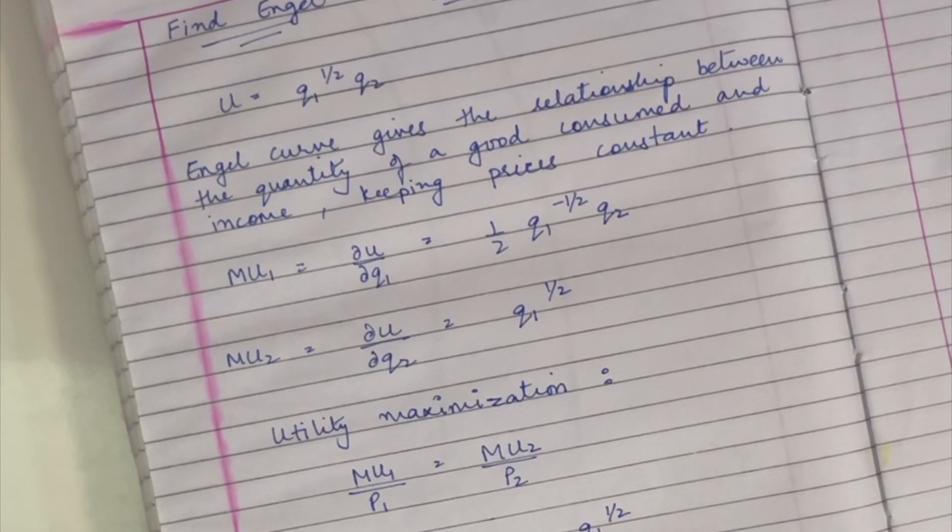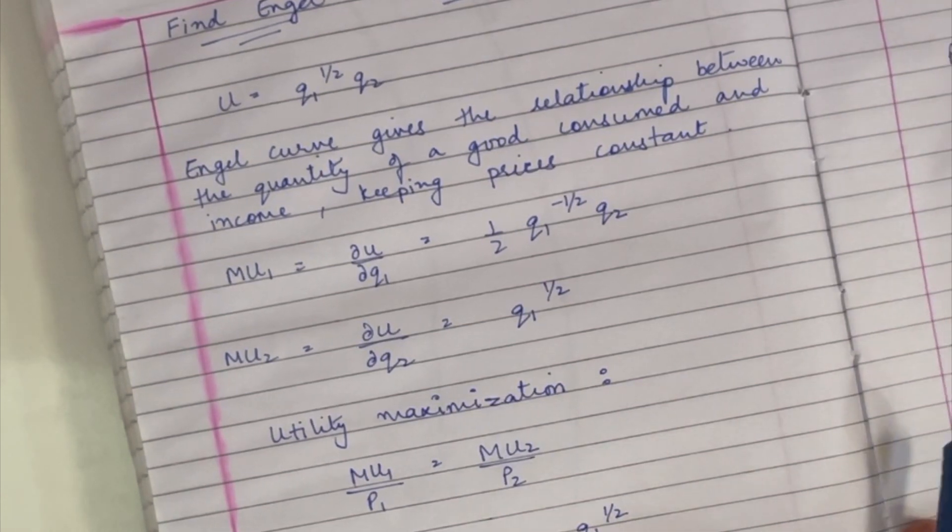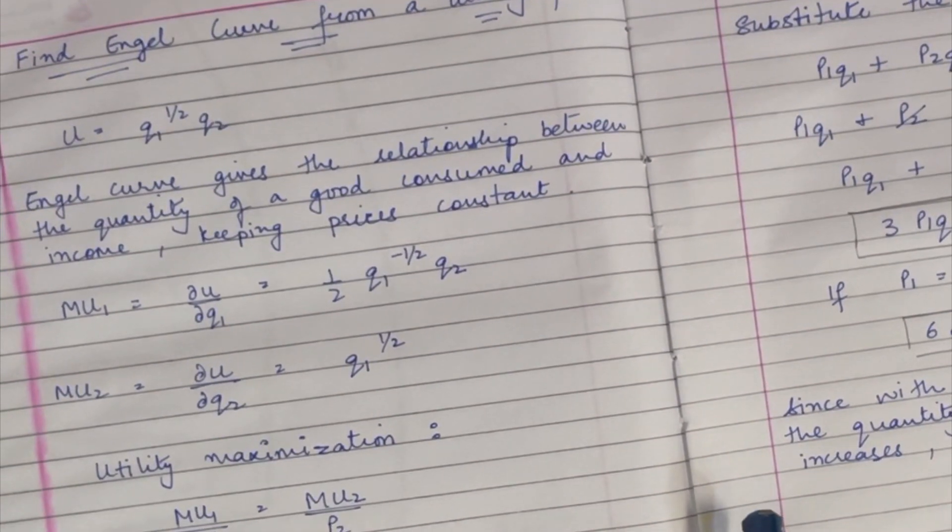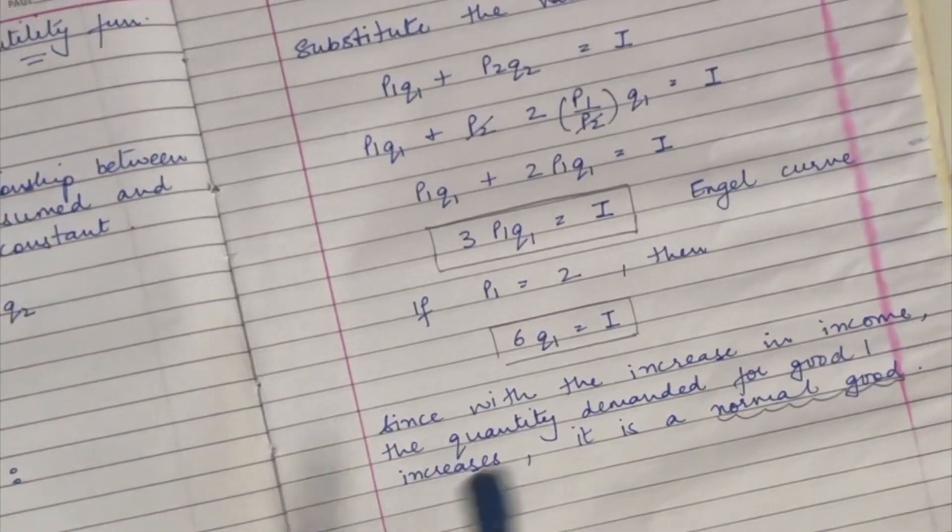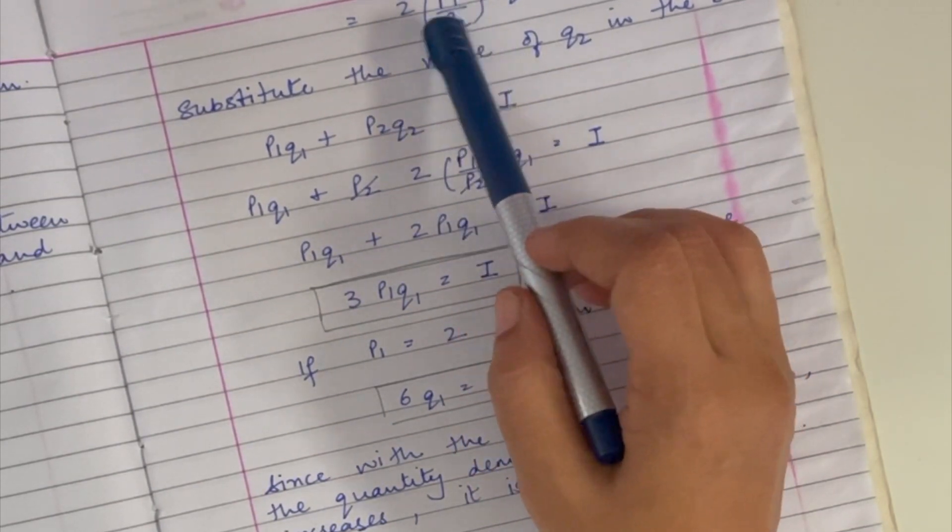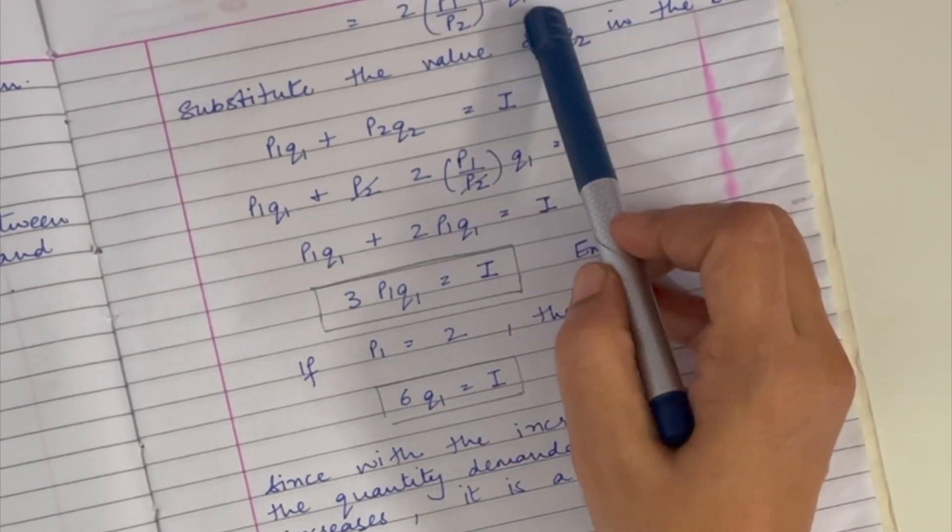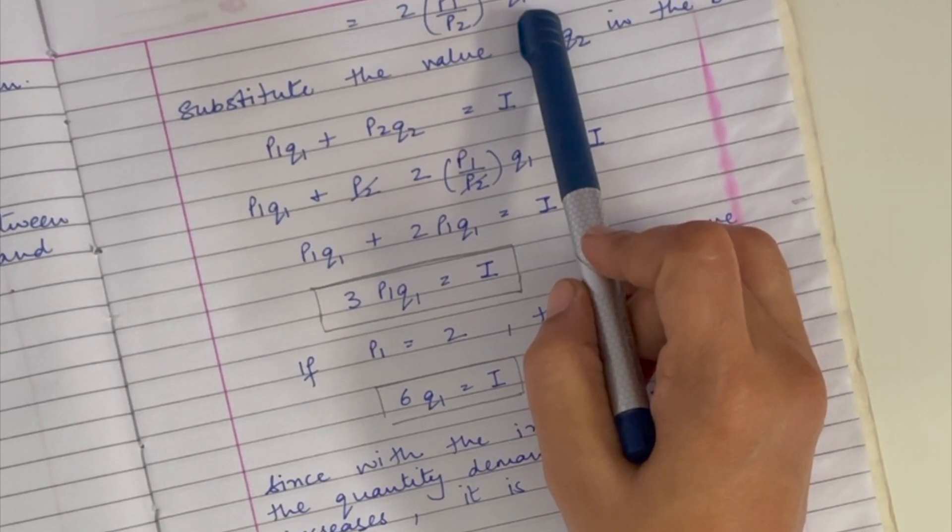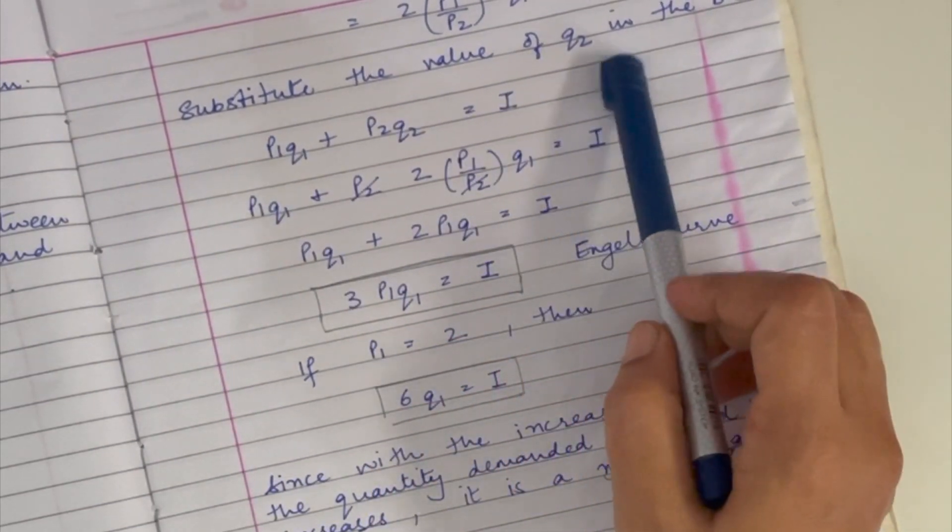This entire thing comes down, so p2 q1 half, so p2 q1 minus half. Now this is equal to nothing but this equation equals p1 to p1 p2 into q1. Substitute the value of q2 in the budget constraint.